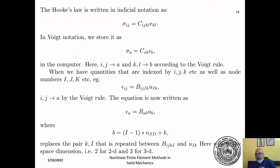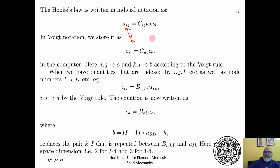Now, how do we manage Hooke's law? For Hooke's law, sigma_ij = c_ijkl * epsilon_kl. We take two indices at a time: sigma_ij maps to index a, so i-j maps to a. k-l maps to index b, and epsilon_kl maps to the same index b. In Voigt notation, this is written as sigma_a = c_ab * epsilon_b.